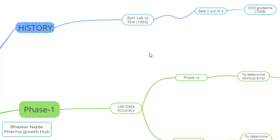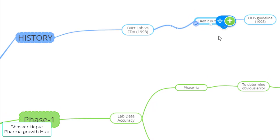What was the practice followed by Barr Labs? If there was an out of specification result, Barr Labs used to conduct testing for the same sample two more times, so there would be three results available — the first OOS result and two retesting results. Barr Labs used to select the two best results out of these three. If both retesting results met the specification, Barr Labs would release the batch. But US FDA had a concern about this approach, saying it was not scientific and that no reference was provided by Barr Labs.